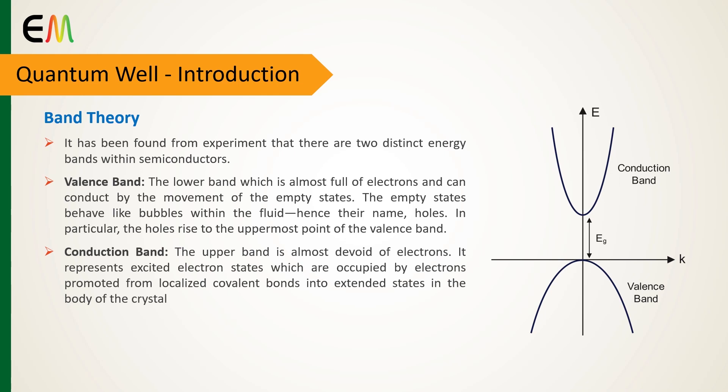The upper band is almost devoid of electrons. It represents excited electron states which can be occupied by electrons promoted from localized covalent bonds into the extended states in the body of the crystal.